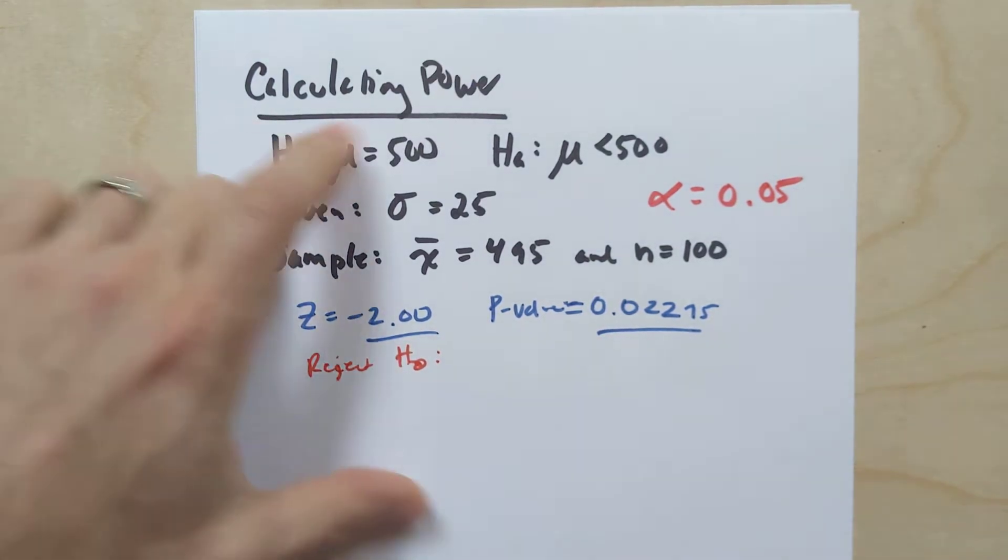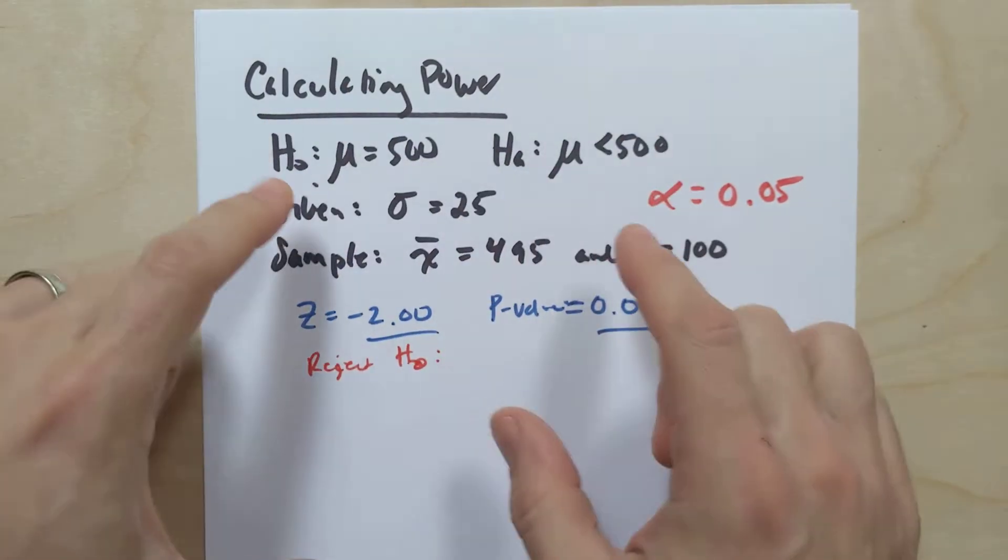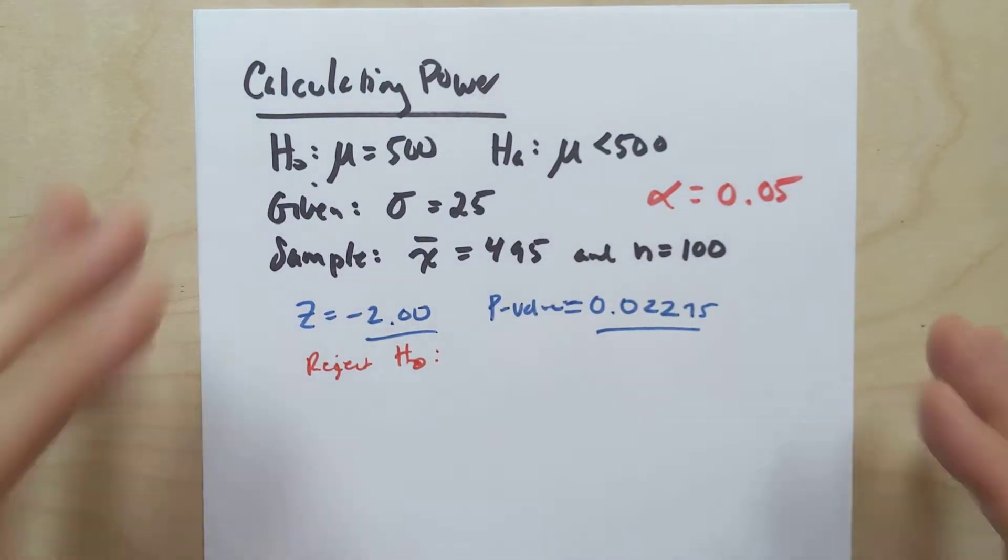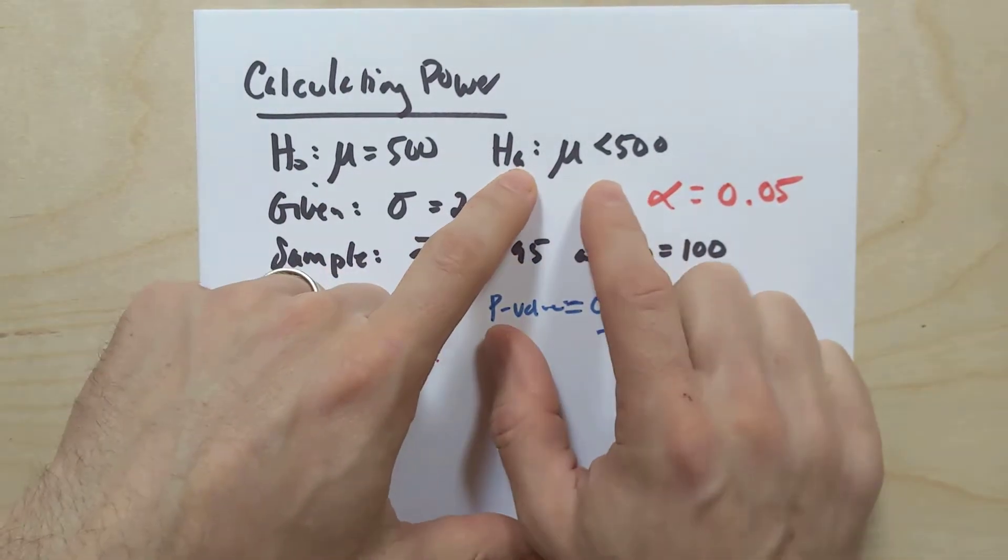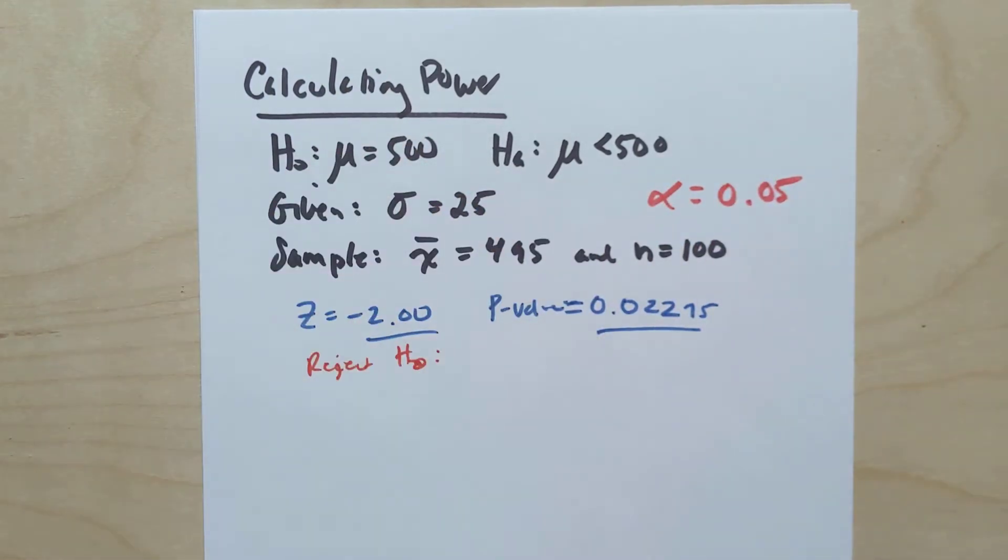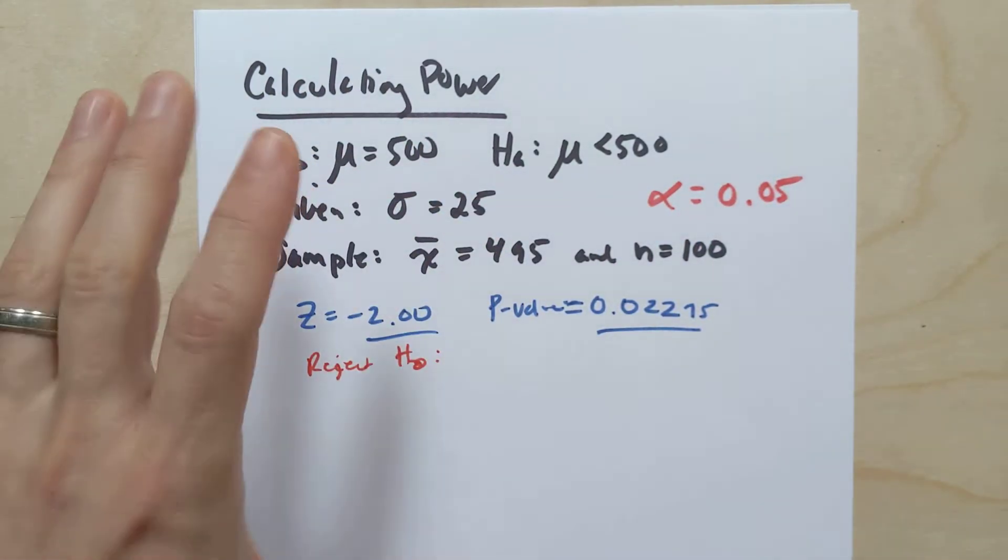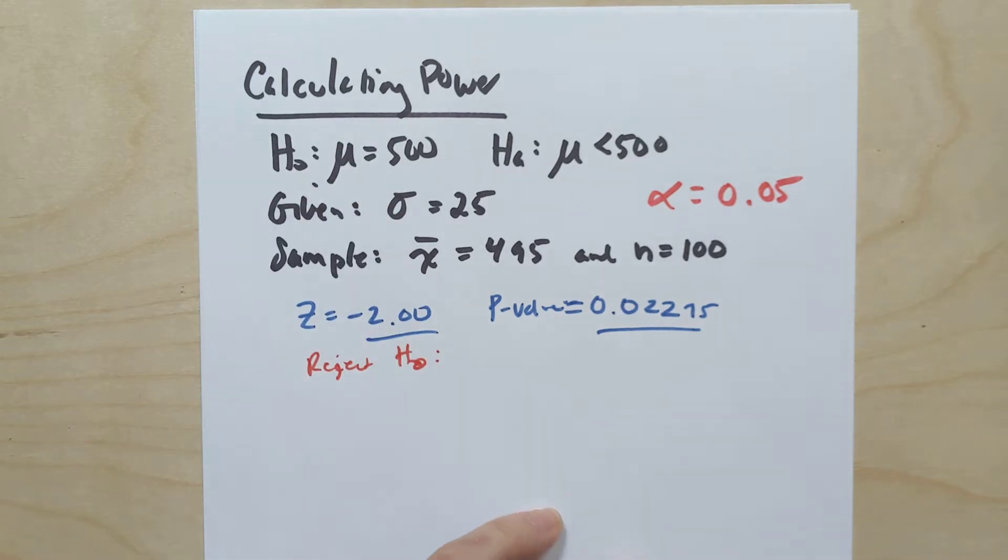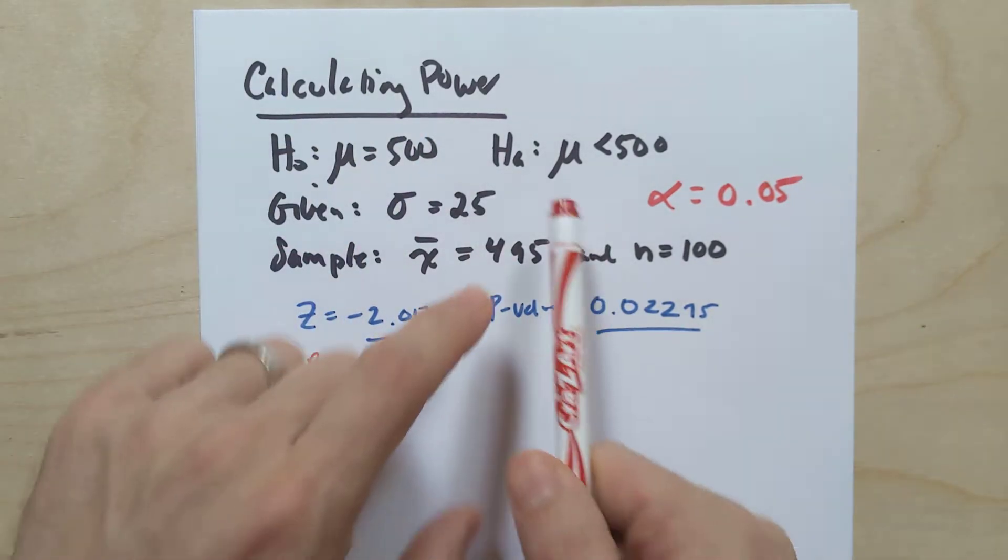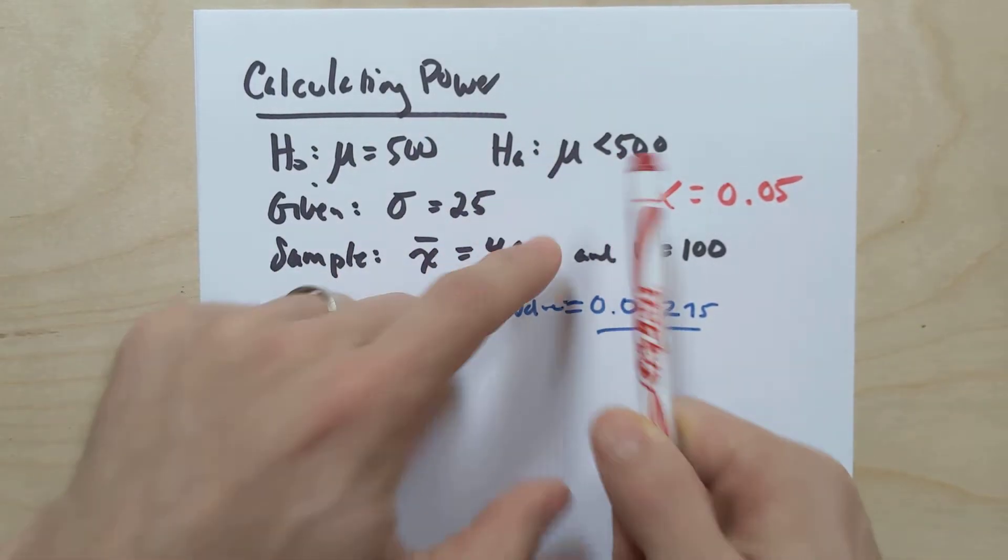Now, when we're talking about power, we're talking about the probability of correctly rejecting null hypothesis. The null hypothesis is, in fact, false, and we successfully detect that it's not true, and we reject it, right? So power only makes sense if the alternative is what is true, right?